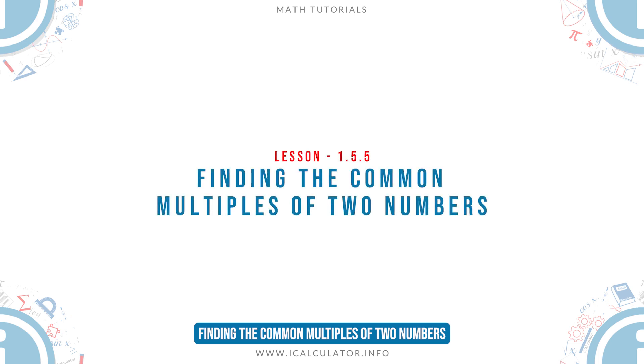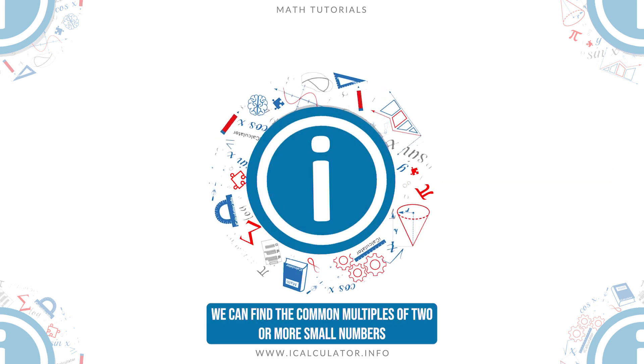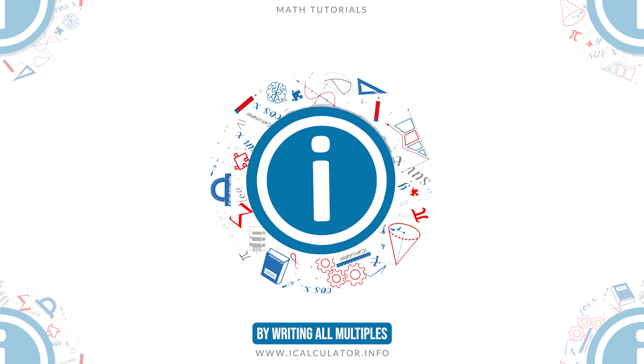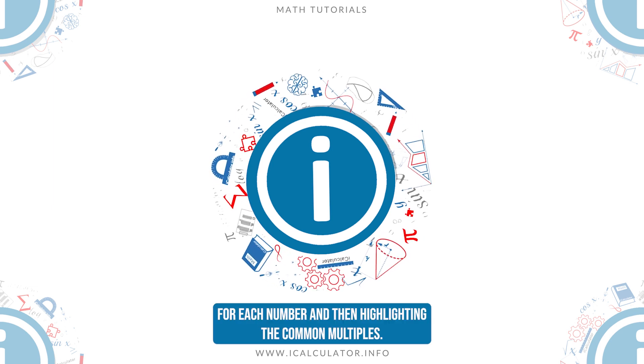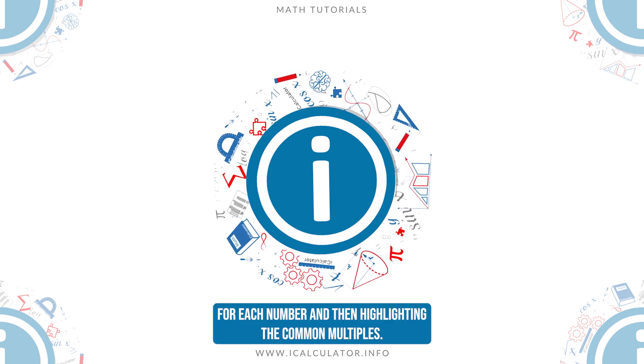Finding the Common Multiples of Two Numbers. We can find the common multiples of two or more small numbers by writing all multiples for each number and then highlighting the common multiples.